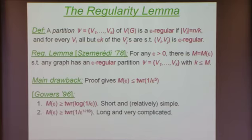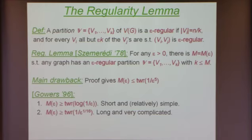He also gave another proof showing that M of epsilon grows like a tower of height polynomial in 1 over epsilon, but this proof is extremely long and complicated — to the point that I have to admit I never managed even to get through the definition of the graph. I've just heard that Julia managed to do this, or a student, or both of them together. Everything I'm going to say is only about the short proof, which is one of my all-time favorite proofs — a really ingenious argument.